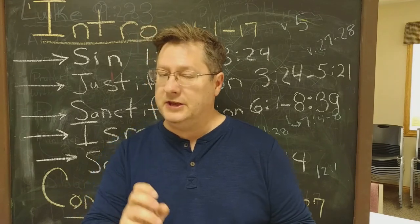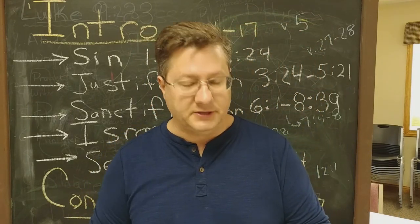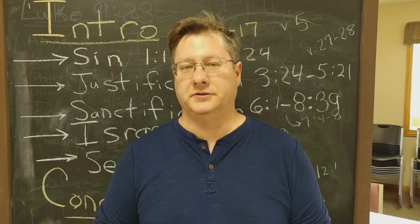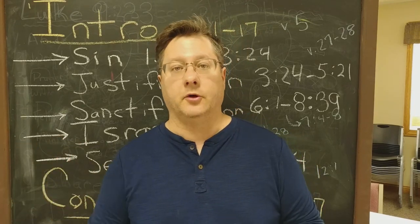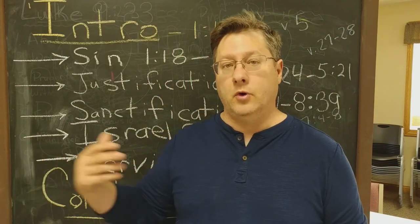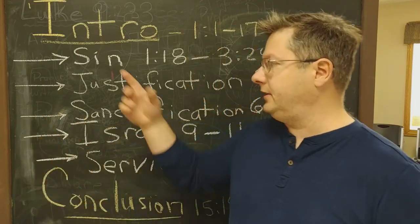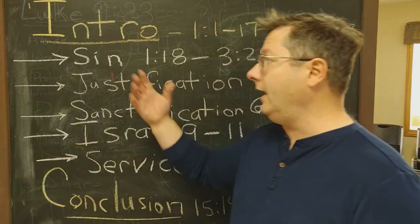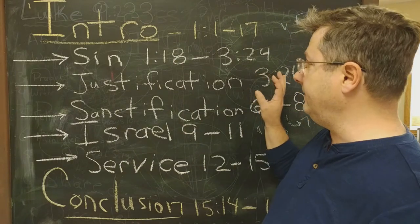Chapter 5 verse 1 is a key verse in that section. He says therefore since we have been justified by faith we have peace with God through our Lord Jesus Christ. He emphasizes that we are justified by faith. The flow goes into that. We have peace with God who in the first section we saw that he was angry. His wrath was upon us because of our sin. But because of our faith in Jesus Christ we now have peace with God. God's wrath is no longer on us.